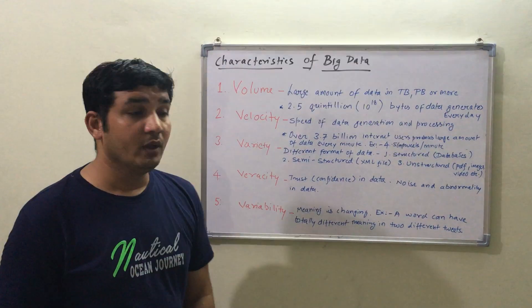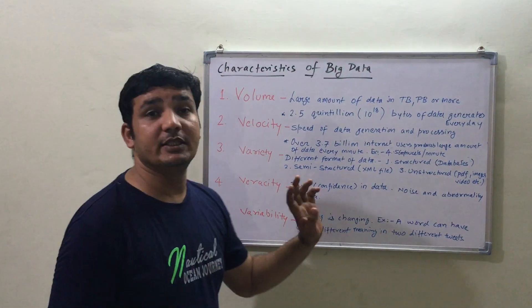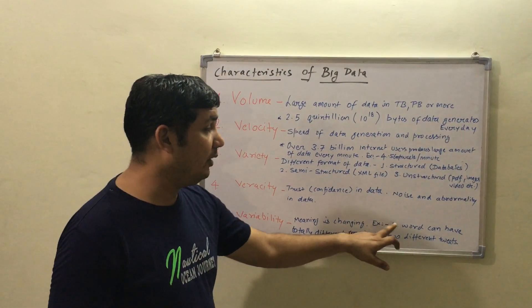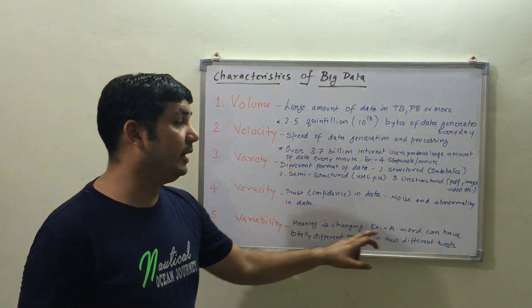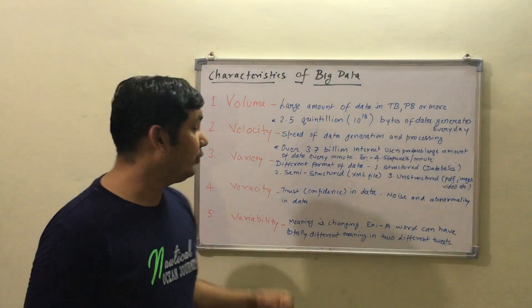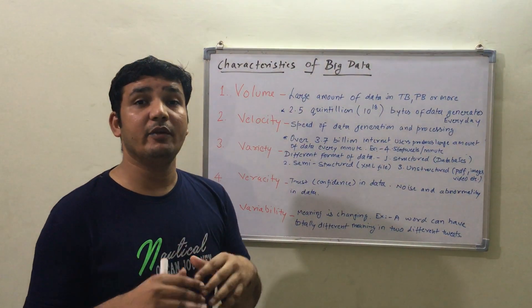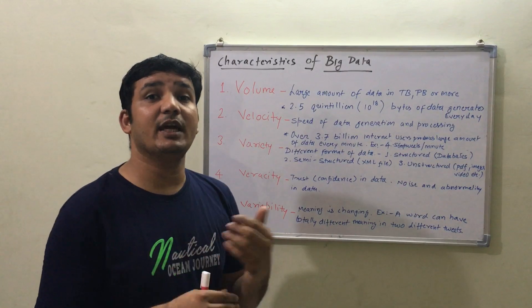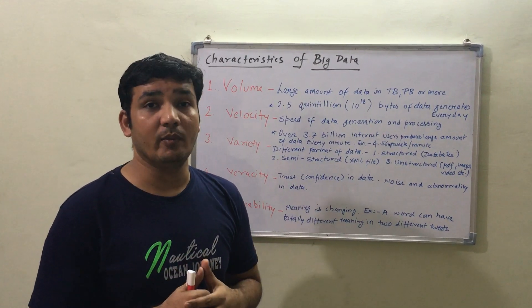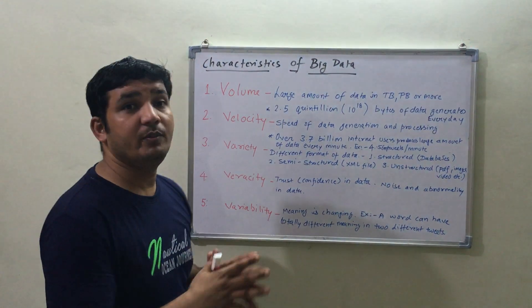Finally comes Variability. Variability means meaning is changing. For example, a word can have two different meanings in two different tweets. Variability is another big problem in Big Data, where words can have different meanings in different situations. Handling such problems is also a Big Data challenge. These are the characteristics of Big Data.